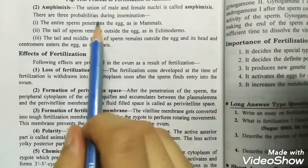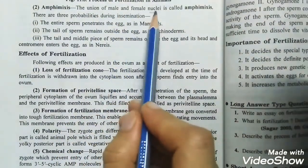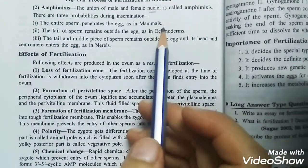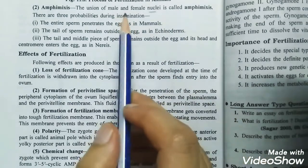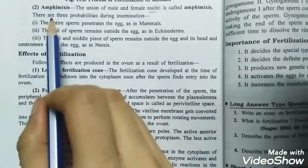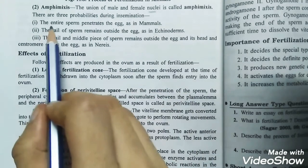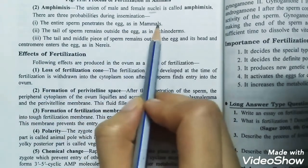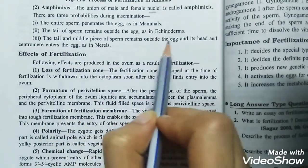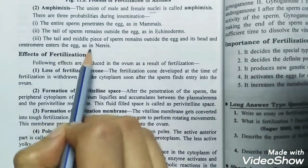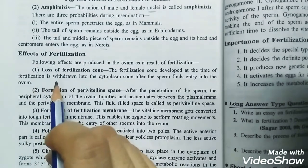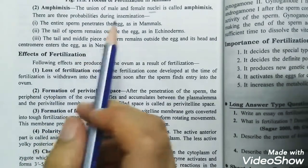Now we will see amphimixis. Amphimixis is the union of male and female nuclei. If somebody asks about the union of male and female gametes, the answer is fertilization, but if they ask about the union of male and female nuclei or pronuclei, the answer is amphimixis. There are three probabilities during insemination: the entire sperm penetrates the egg as in mammals; the tail of the sperm remains outside as in echinoderms; or the tail and middle piece remain outside and only the head and centrioles enter the egg, as in nematodes.